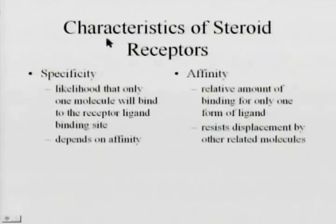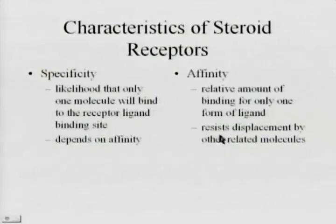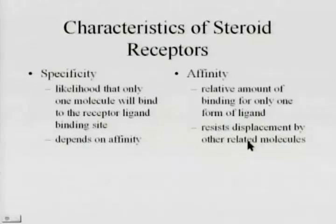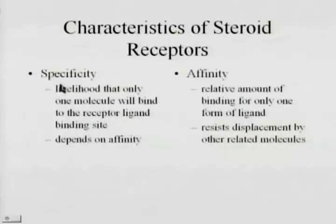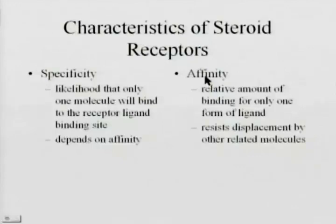Let's consider characteristics of steroid receptors. From those two panels, we saw something about the affinity — relative binding for one form of ligand, resisting displacement by other related molecules. When the same molecule is used, one tritiated and one not, there was equivalent displacement. But a slightly different molecule will have different affinity — highest for the cognate ligand and differing for other related molecules. Specificity is the likelihood that only one molecule will bind to the receptor ligand-binding site, and it depends upon receptor affinity — specificity and affinity have an interplay.